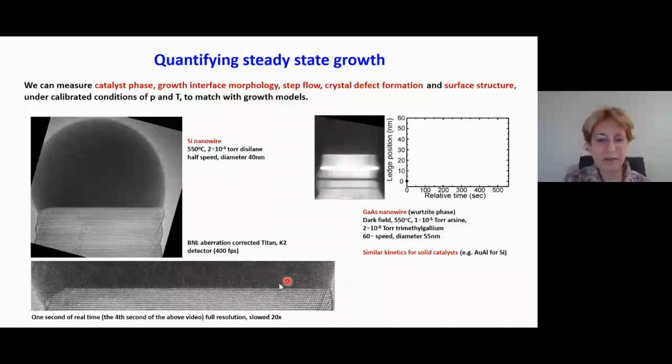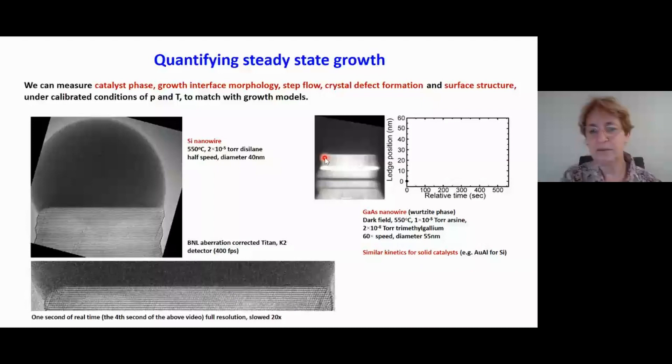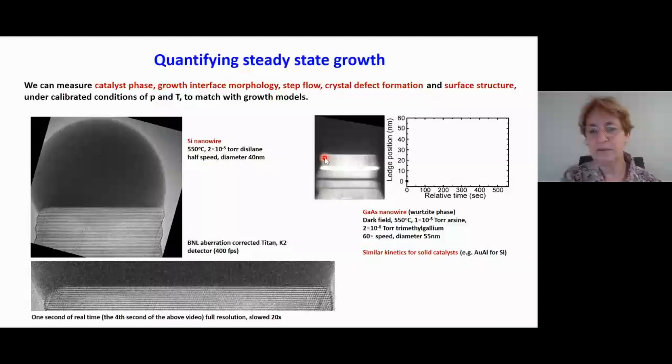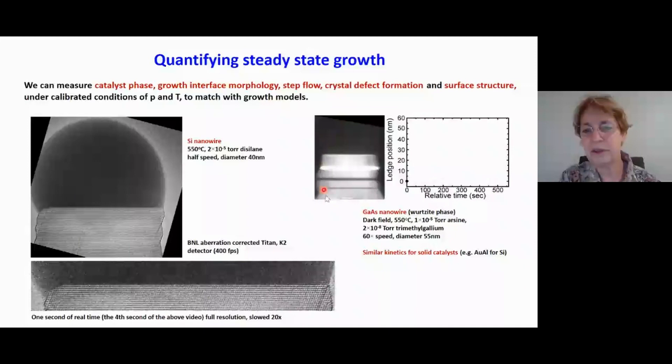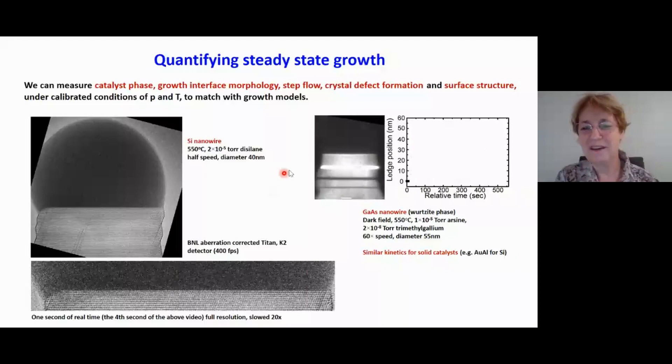Let's compare this growth of silicon from a gold silicon liquid to the growth of gallium arsenide from a gallium droplet. Here's a dark field image. The imaging conditions don't show the catalyst very well, but can you just see it there? The droplet is just there. If we look at this kind of growth, what you see is a more continuous flow. Do you see the action at the interface? The atomic layers of gallium arsenide are adding in a much more continuous way.